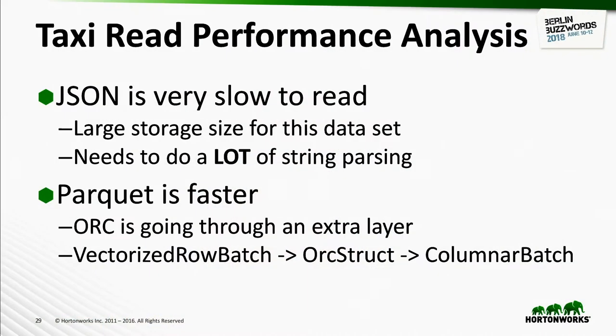JSON is slow because it needs to do a lot of string parsing. I suspect Parquet is fastest because even the faster ORC reader — which is much faster than the old one — still goes through an extra level of indirection: vectorized row batch to ORC struct, then to columnar batch. We've written code to go straight from vectorized row batch to columnar batch, which will make it much faster. We just need that code committed and released.